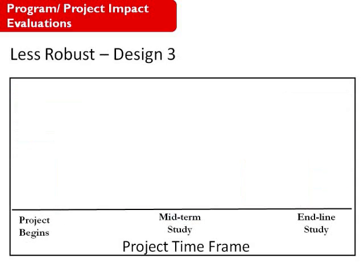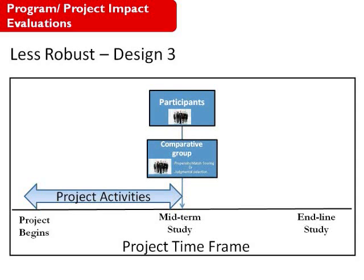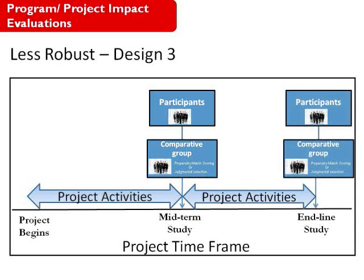Design 3 is less robust. In this design, we don't start with a baseline study for either our participants or the control group — the activities just get started. Then at the midpoint of the project, a midterm study is conducted among both the participants who have been active in project activities and a comparative or control group. Then activities continue to the end of the project, at which time the follow-up or endline study is conducted among both the participants and the comparative or control group.